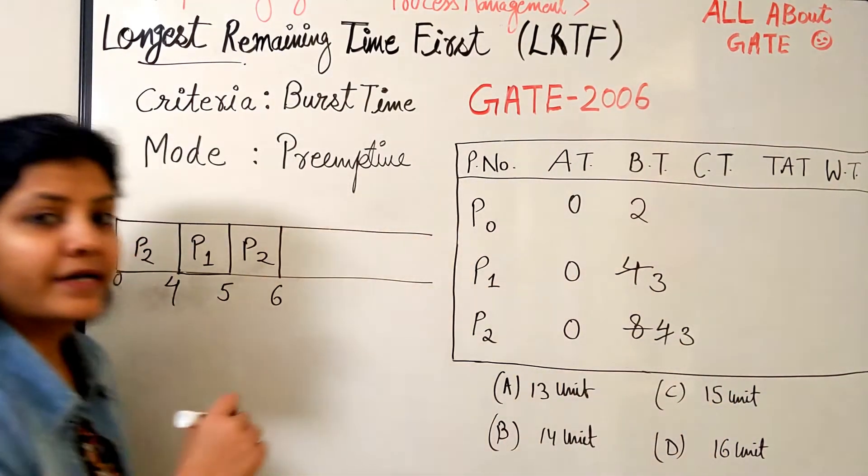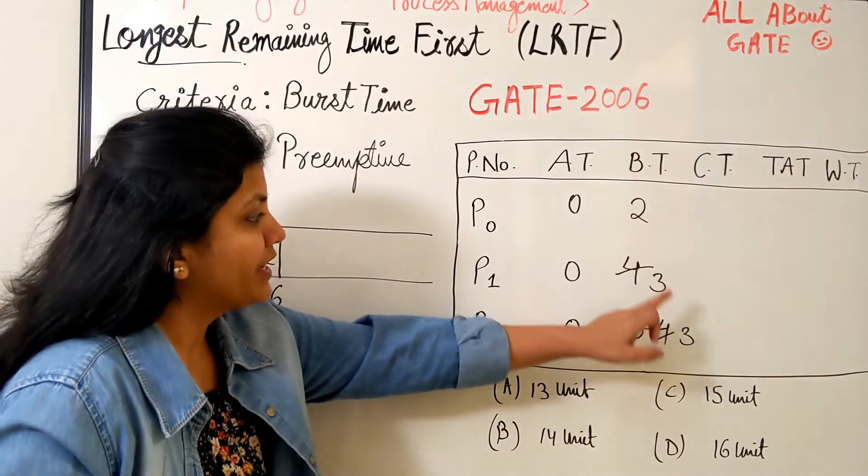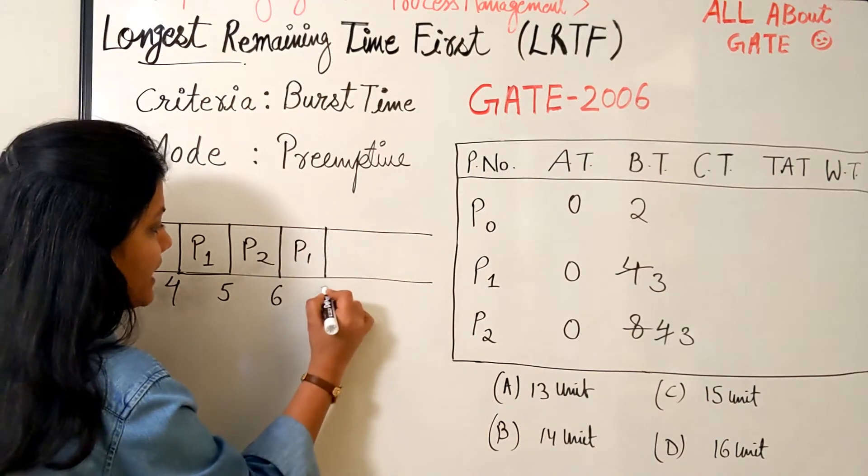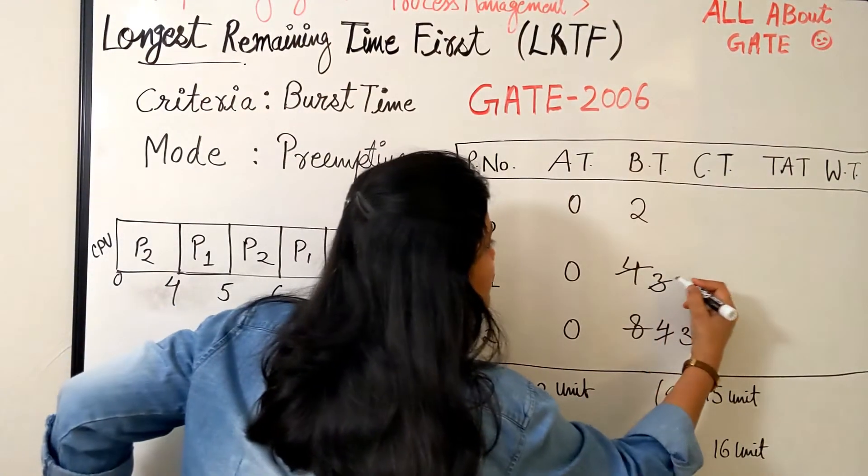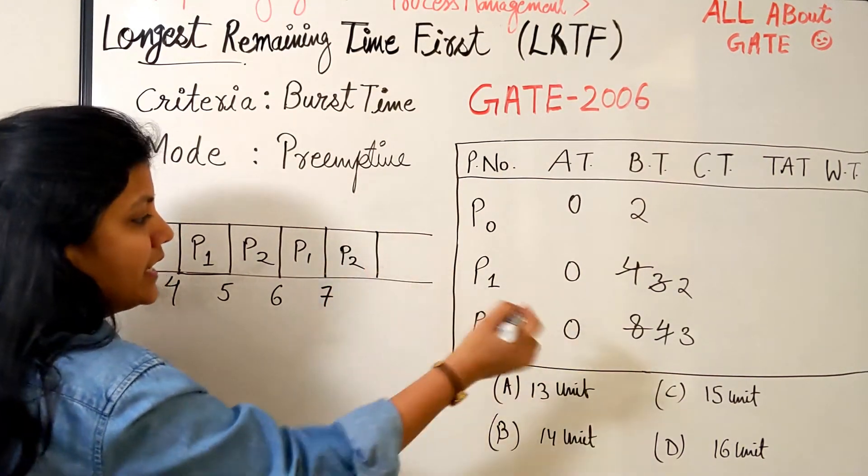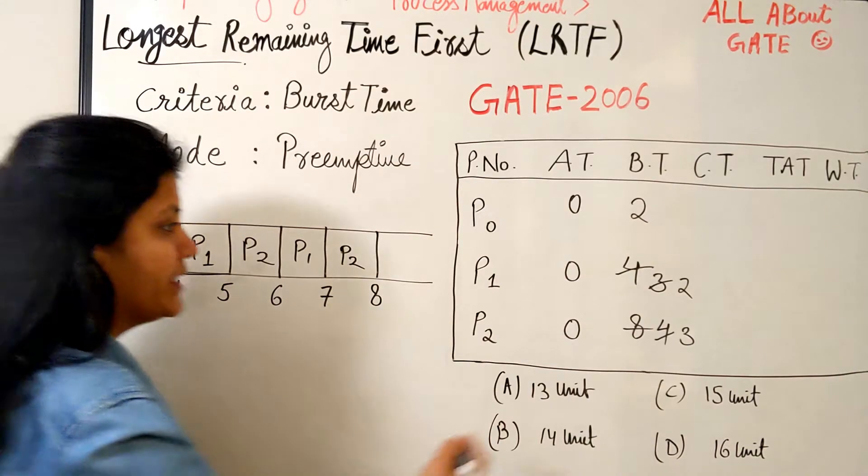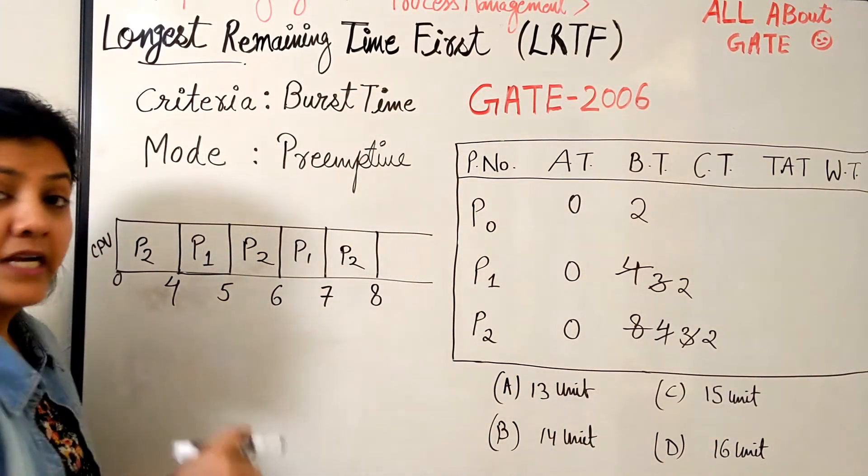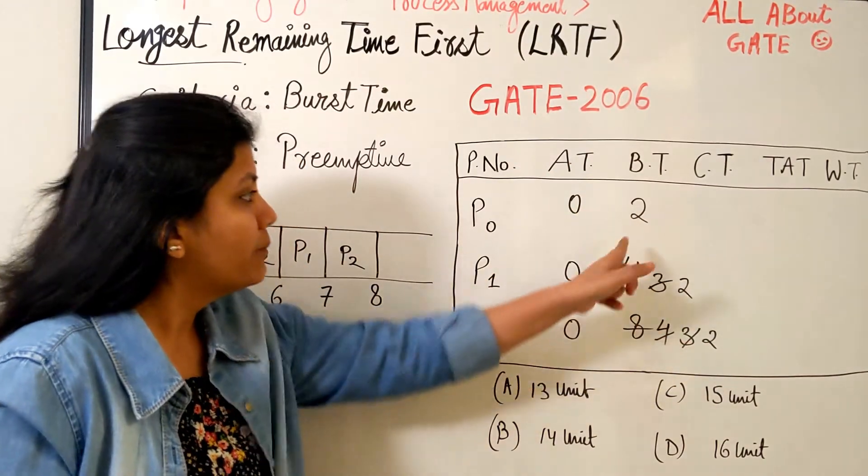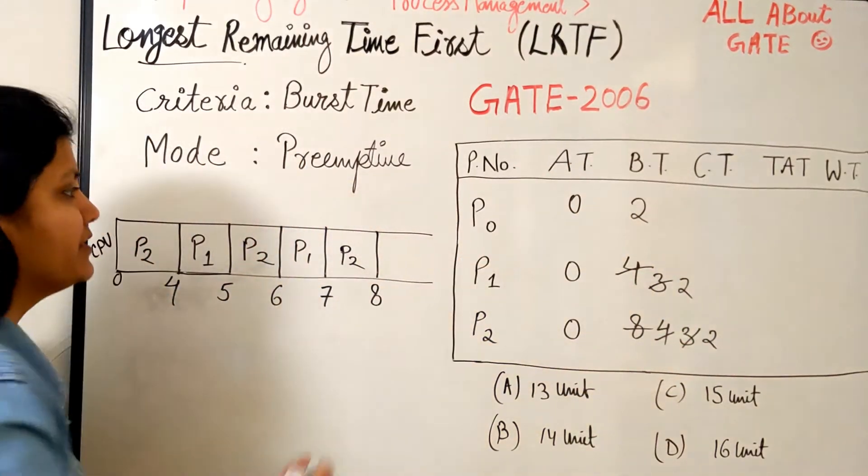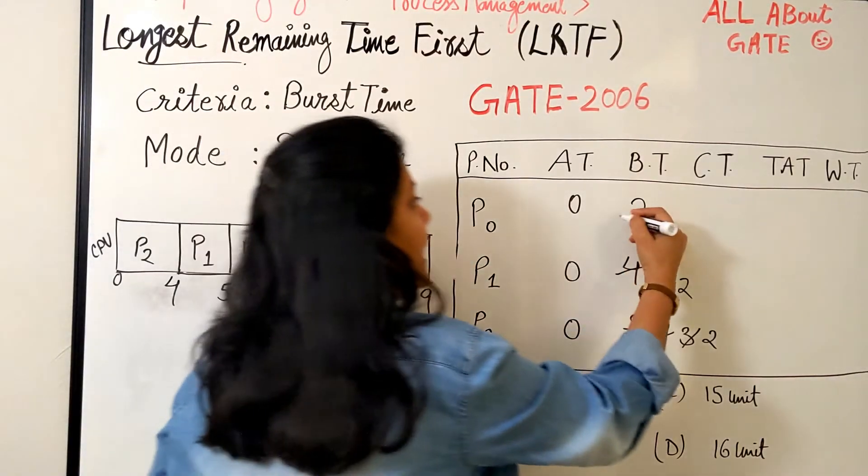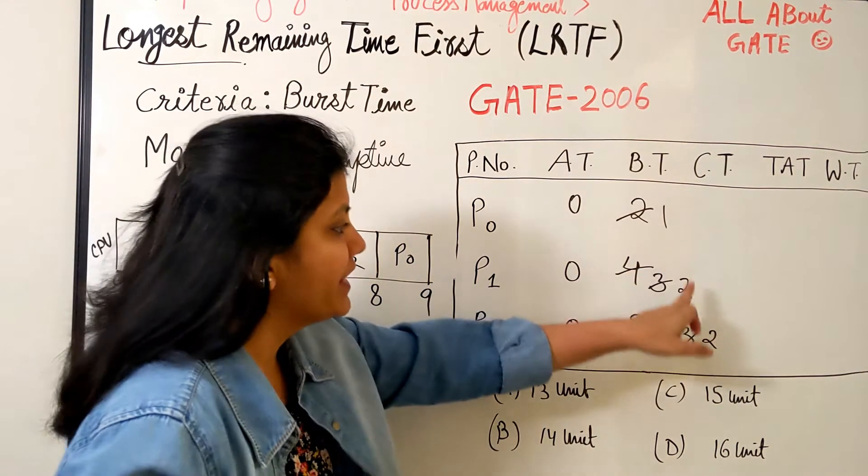P2 has been scheduled for one more burst, so it will become 3. Now again we have 2, 3, 3, so we have 3 and the lower process ID is P1, so P1 will get the chance and it will run again for 1, becoming from 3 to 2. Next is process P2, and it becomes again 7 to 8. Now you see again, interestingly, we have three processes with the same length 2, 2, 2, but the lowest process ID is P0, so now we are going to get P0.